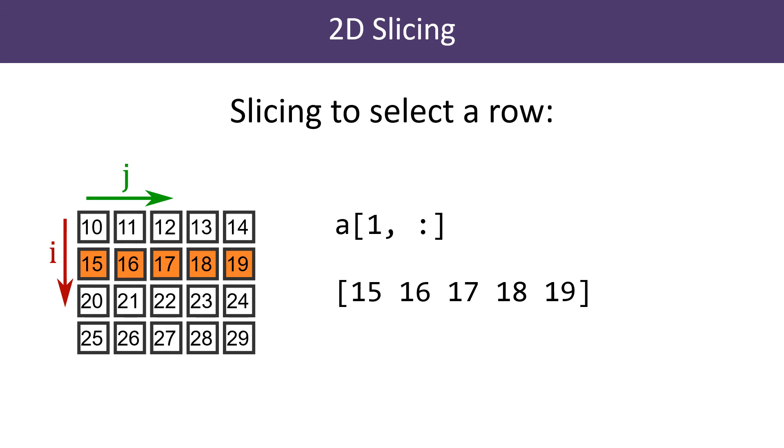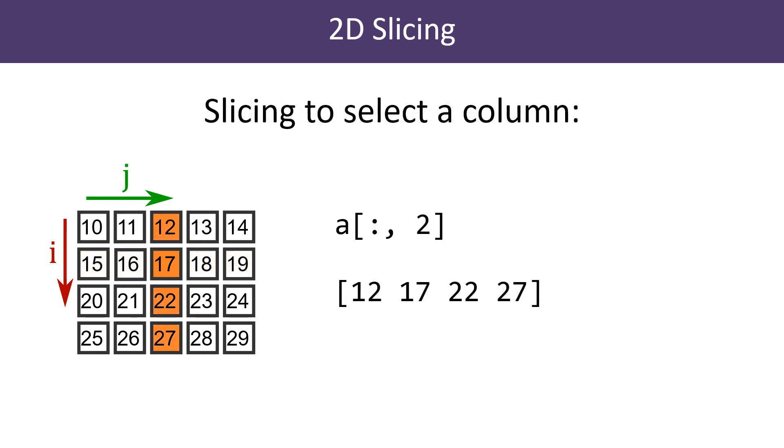So the slice is the whole of row 1. Because we have used an index rather than a slice for the row, what we get back is a one-dimensional array. We can do the same with columns. Here we've sliced the whole of column 2, and again the result is a one-dimensional array.